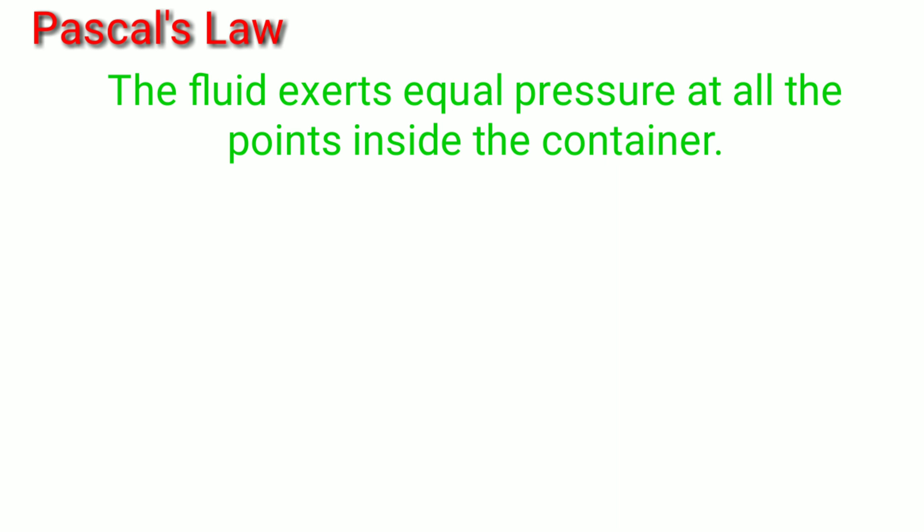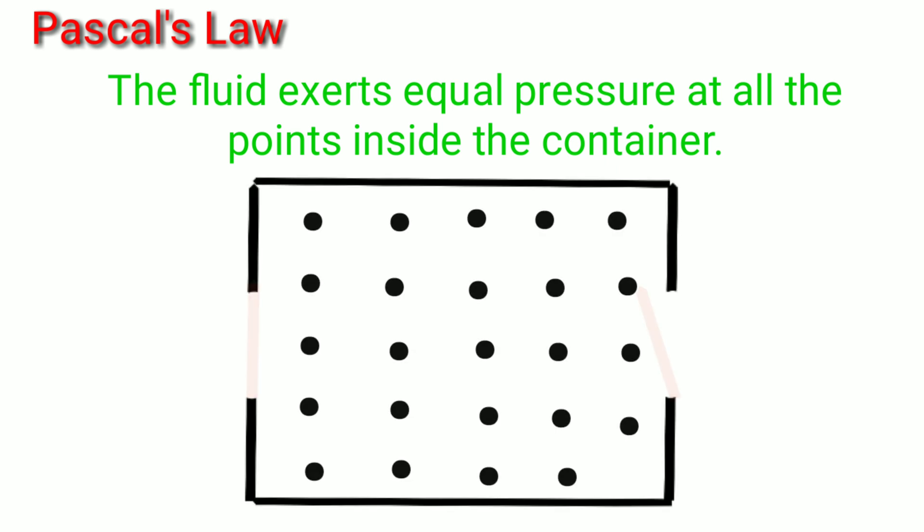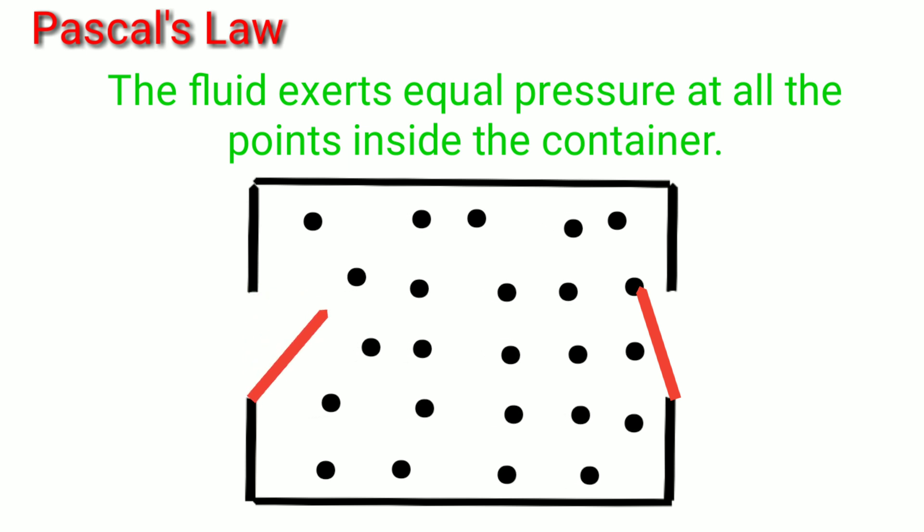In this case, our container is the room and air is the fluid. When I increase the pressure by opening the first door, then there will be increase in pressure at every point inside the room. That's why the another door closes itself a little bit automatically.